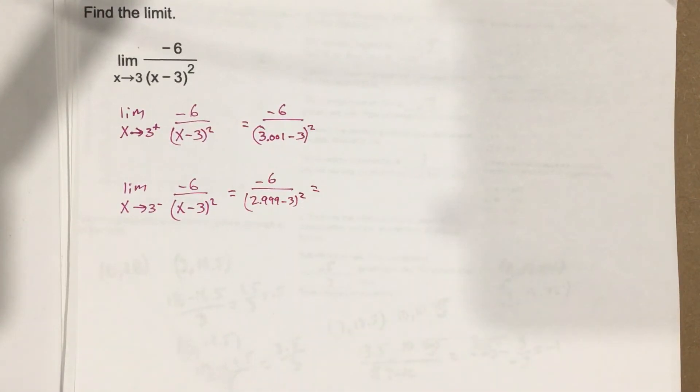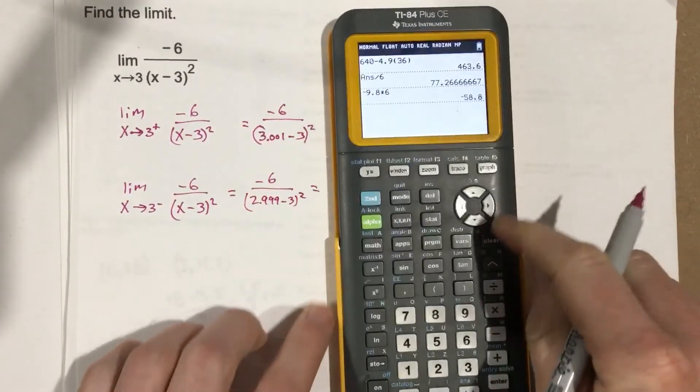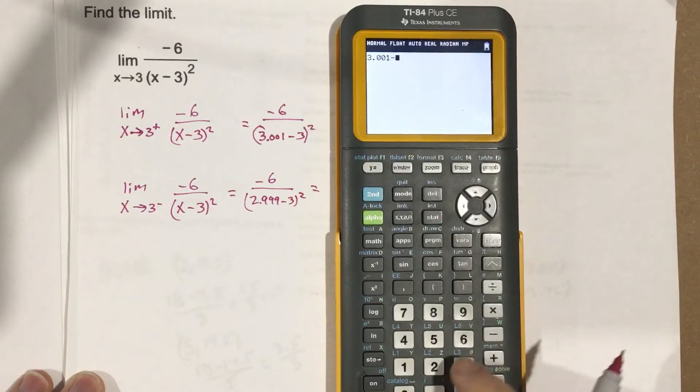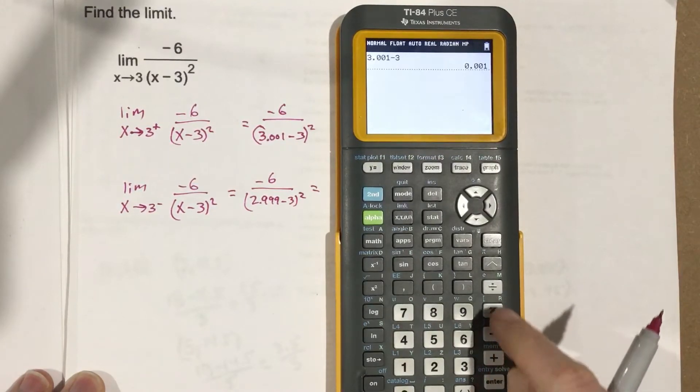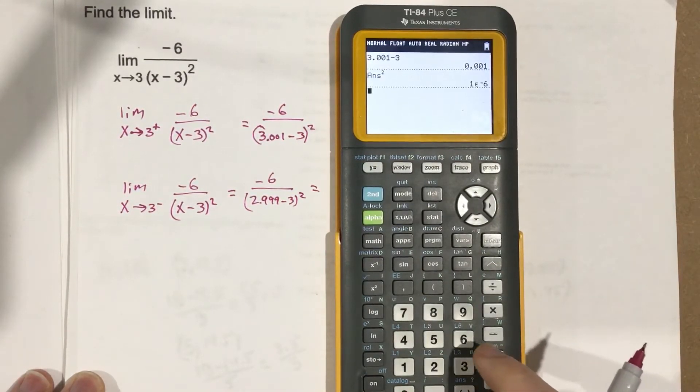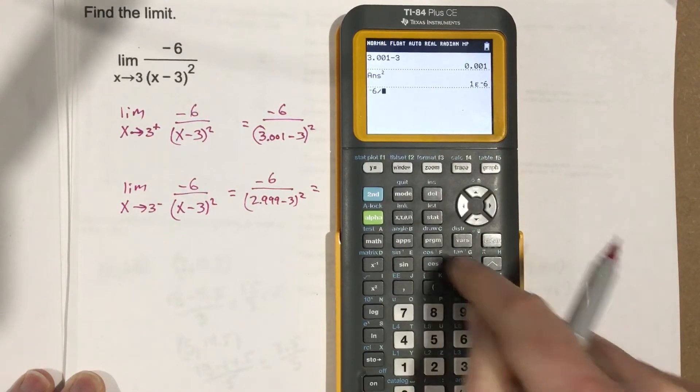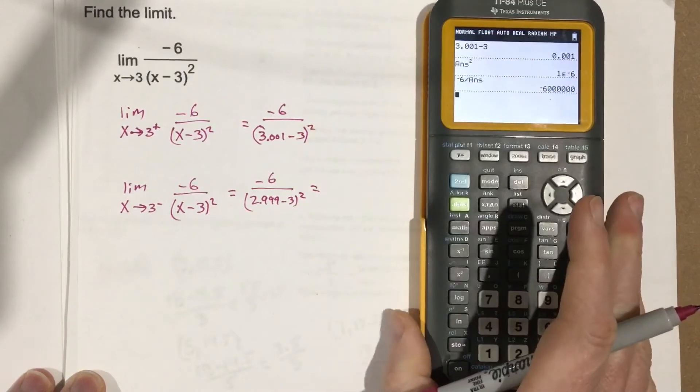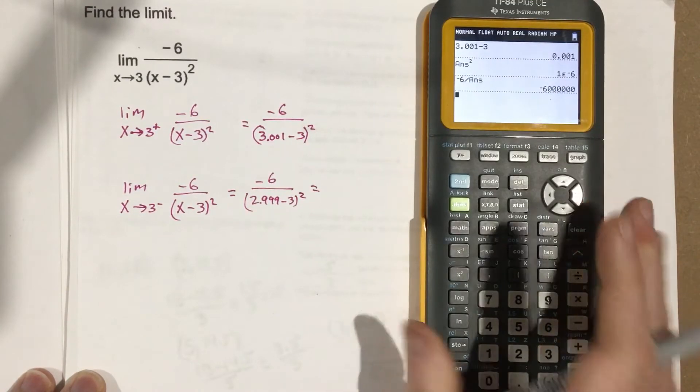Let's see what that gives us in the calculator. We get 3.001 minus 3, square it, and take negative 6 divided by that answer. We get negative 6 million—that's a pretty big number.